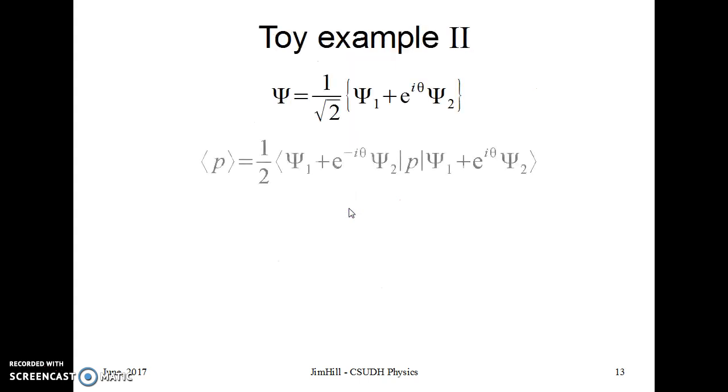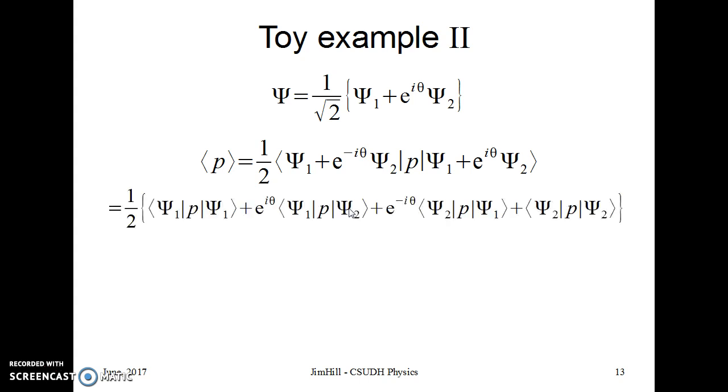My second toy example is about the momentum expectation for the same state. So it starts as the same game. Do the same thing. It's a little more complicated because p is a more complicated operator. But now that first and last term are even easier. They are zero. The middle terms are, again, two things that look like they're just adding the complex conjugates of each other. I have to watch out just a little bit.